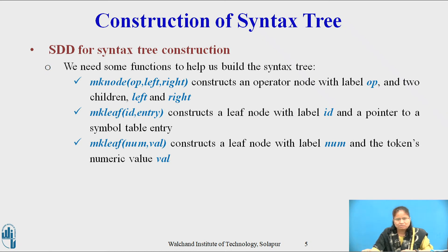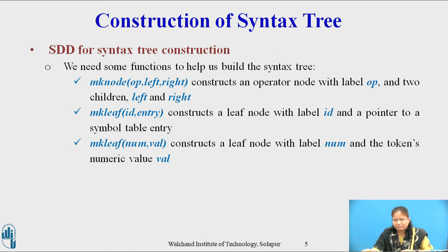The second function is makeleaf(id, entry), which constructs a leaf node with the label id and a pointer to the symbol table entry. The third function is makeleaf(num, val), which constructs a leaf node with the label num and the token's numeric value val.